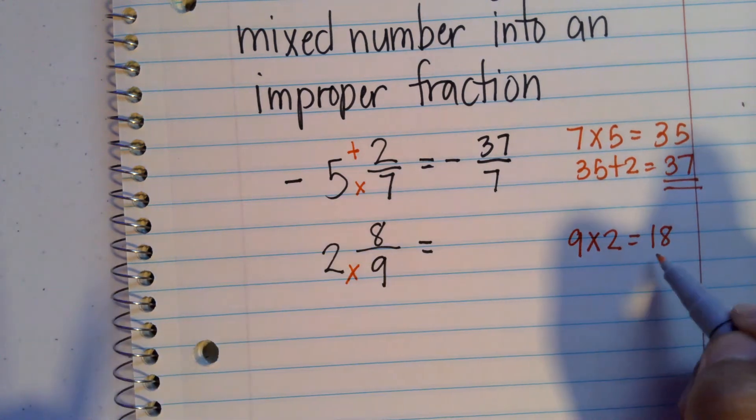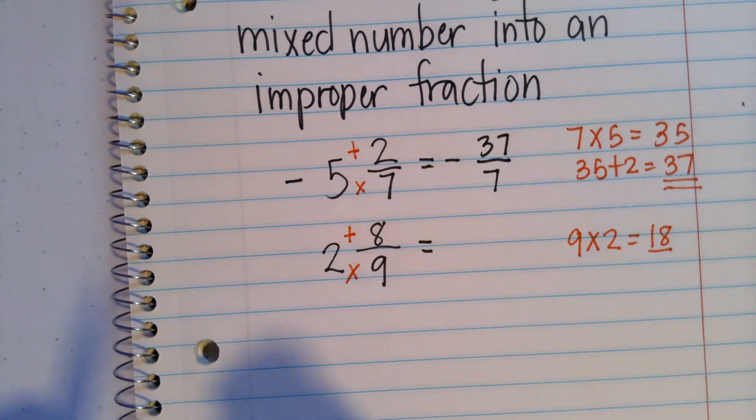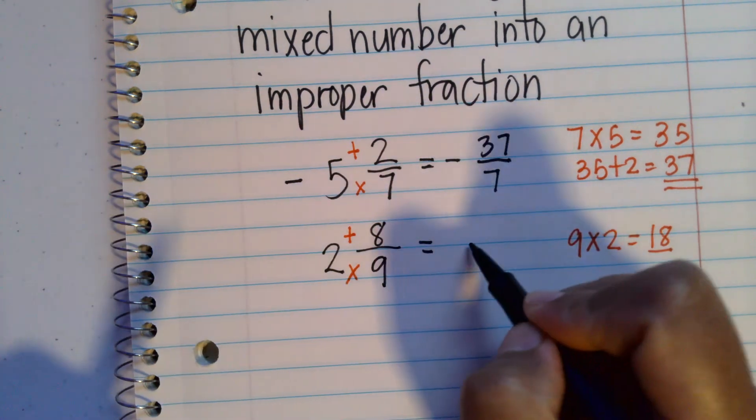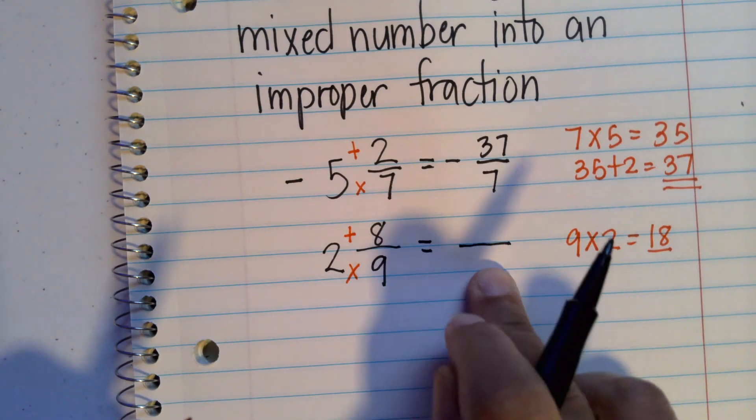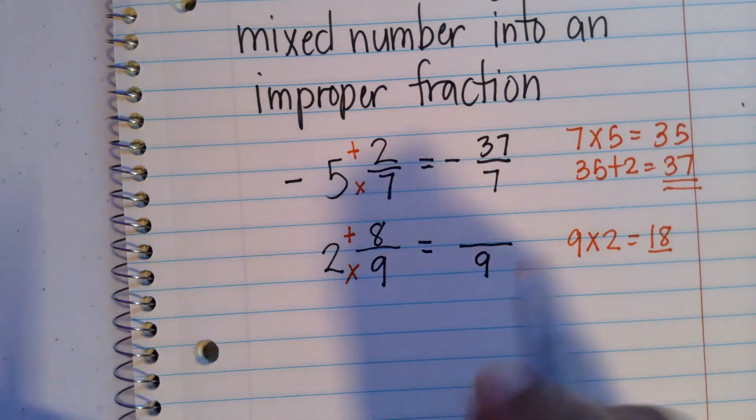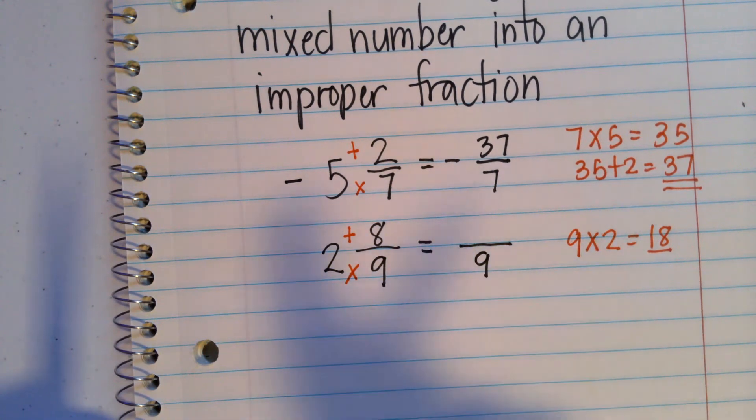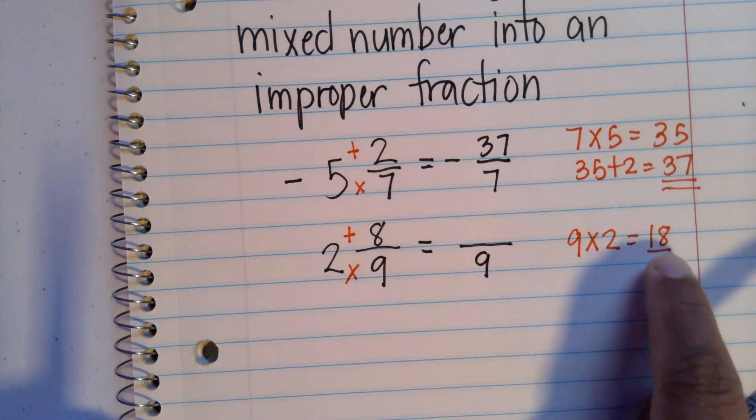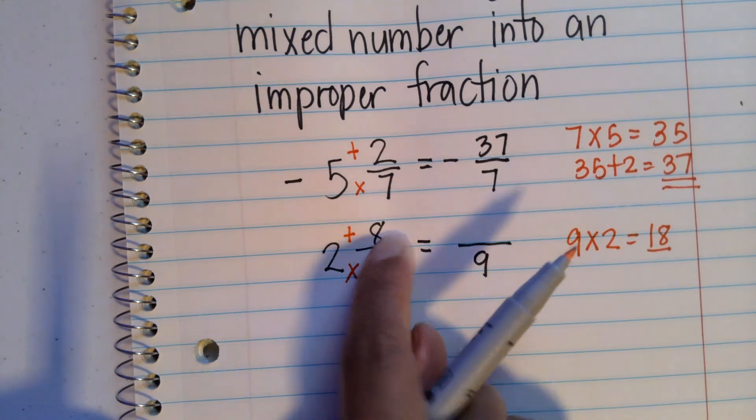And whatever result you get, we add that to the numerator. But just remember that in your improper fraction, the denominator will stay a 9. But what will be the numerator? And that's going to be the sum of 18 and that number 8.